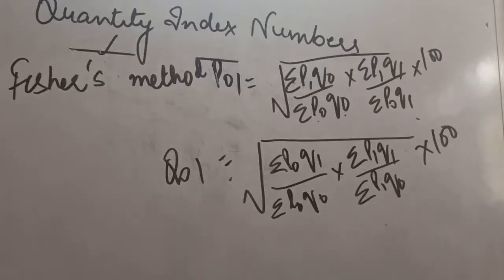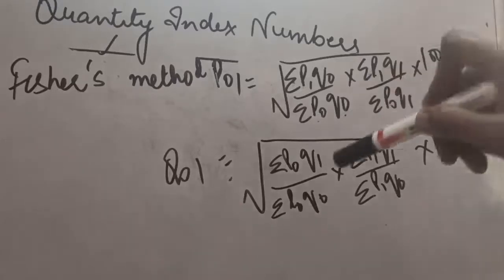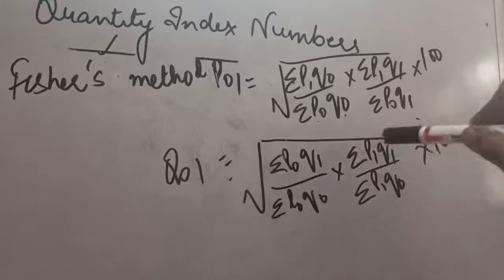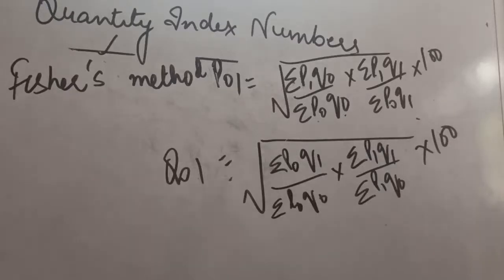Like this we can calculate the Quantity Index in any question. We will just calculate these values. As we have seen in the previous videos, how we calculate these values. Because in the question, we are given P and Q for base year as well as current year. So, just check these four values from there, fill here, and you can calculate the Quantity Index in any formula.